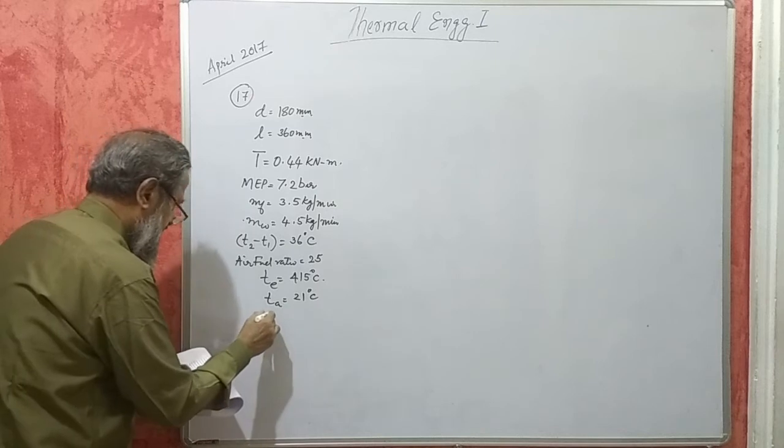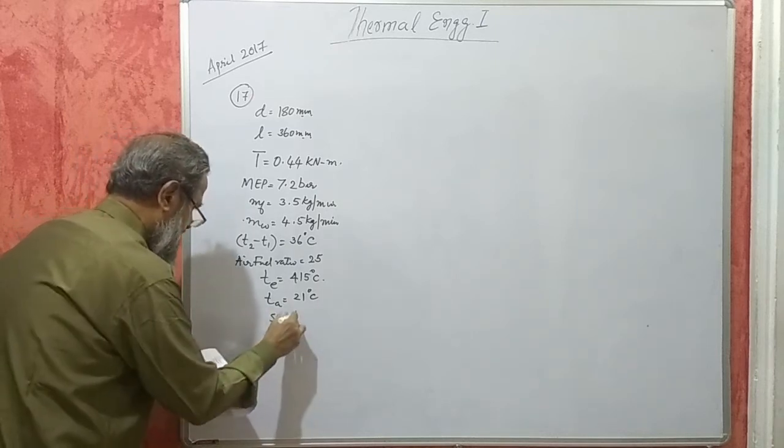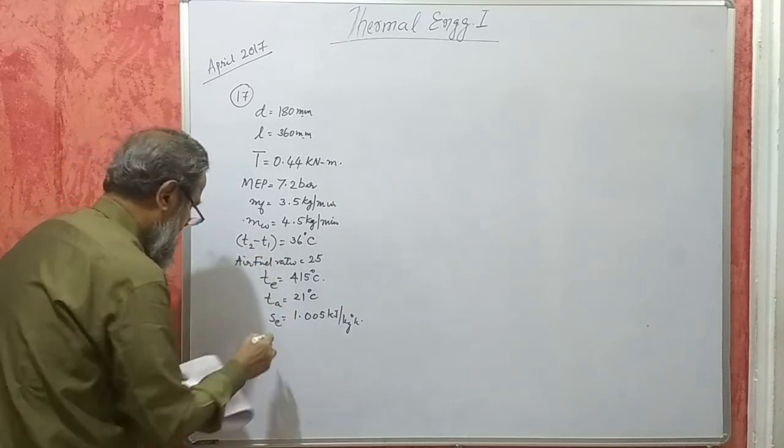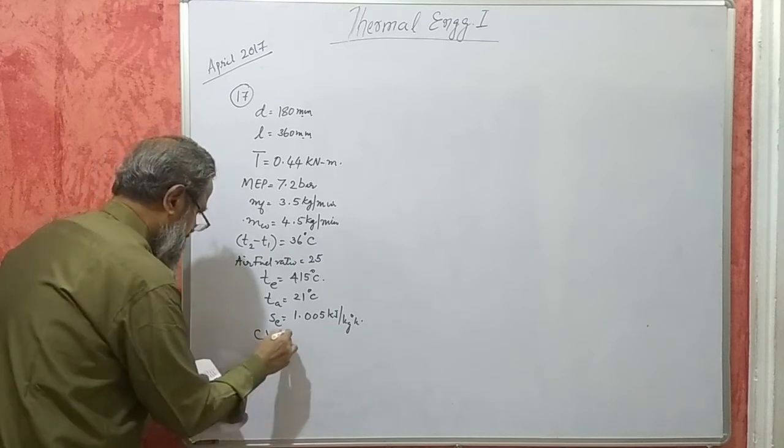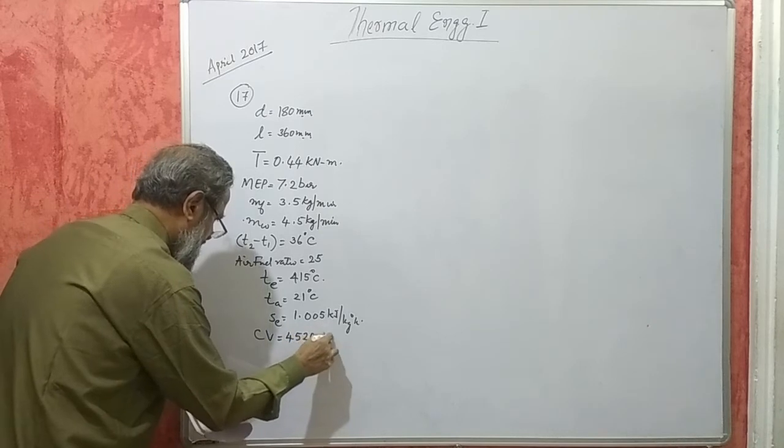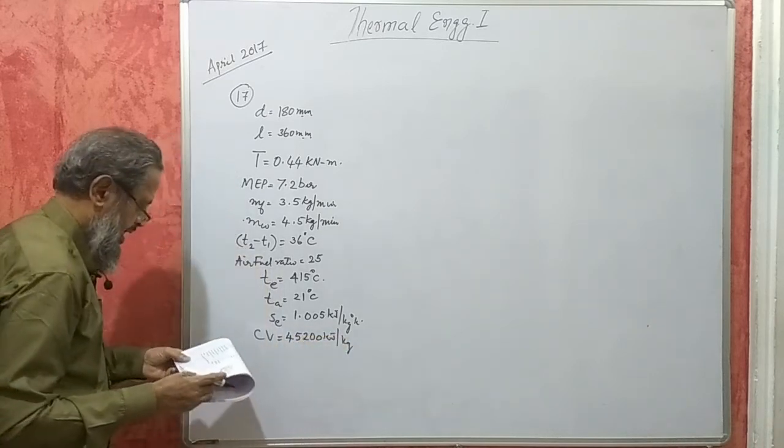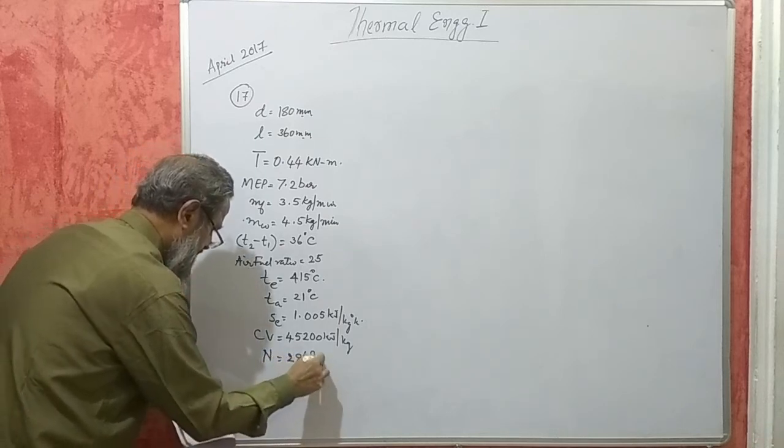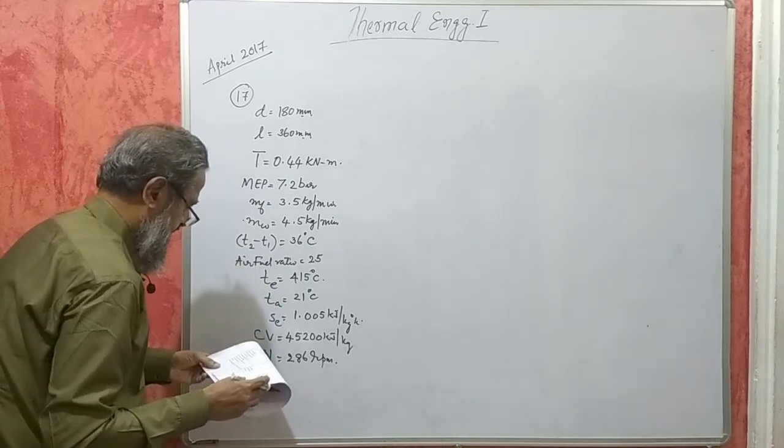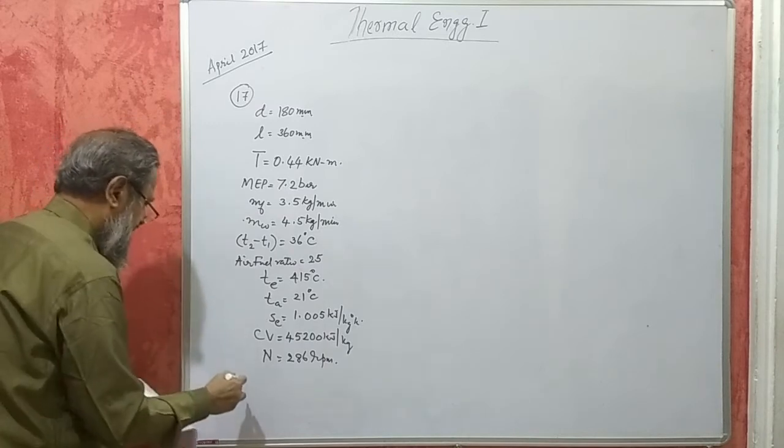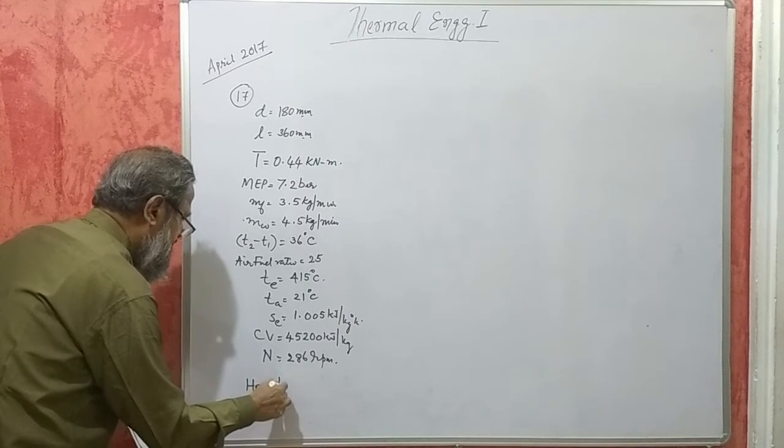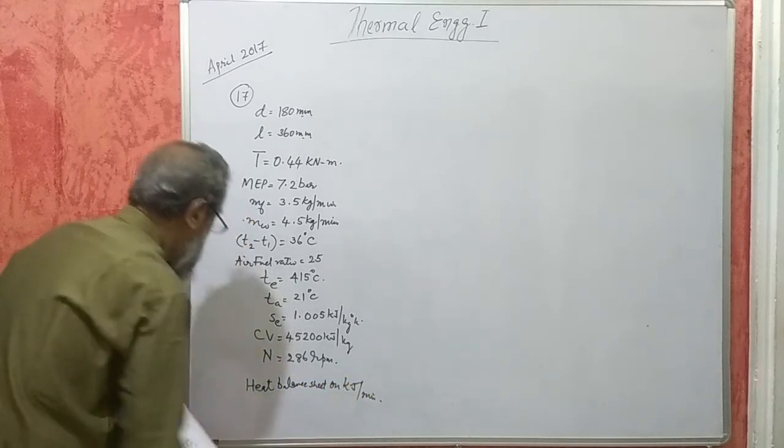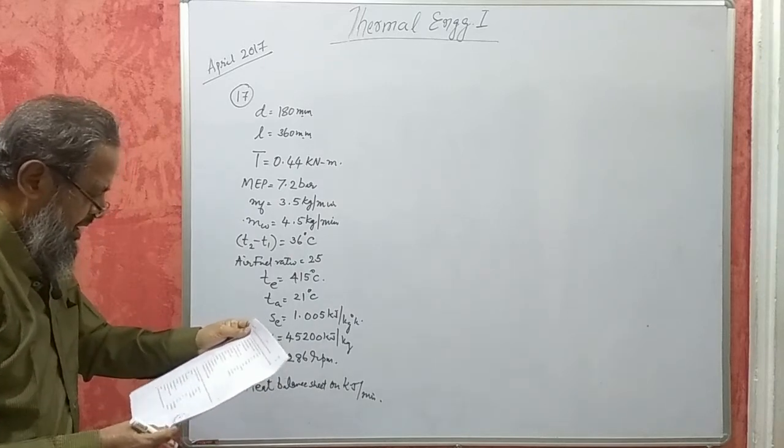Specific heat of exhaust gases SE is 1.005 kilojoule per kg degree Kelvin. Calorific value of fuel CV 45,200 kilojoules per kg. Speed N 286 RPM. Draw heat balance sheet on kilojoules per minute basis. This question carries 10 marks.